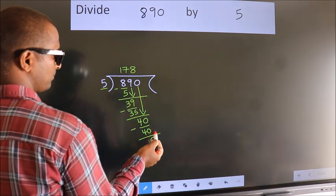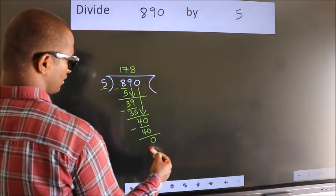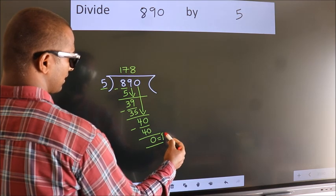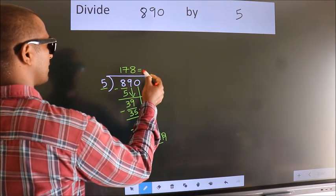No more numbers to bring down. So we stop here. This is our remainder. This is our quotient.